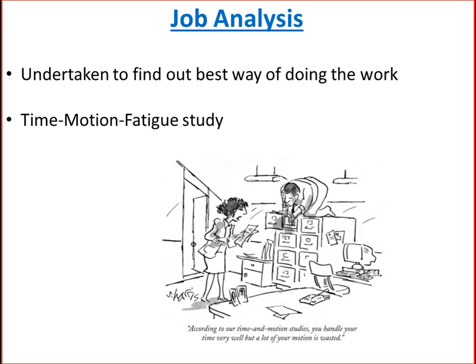The third element of scientific management is job analysis, undertaken to find the one best way of doing things so that work can be standardized. The best way is determined through time, motion and fatigue studies. Time study involves determining how much time a movement by a worker takes and standardizing time for various activities. Motion study involves studying workers' movements and eliminating any wasteful movements. Fatigue study shows the amount and frequency of rest required for completing work.